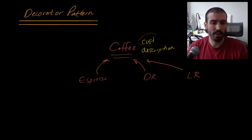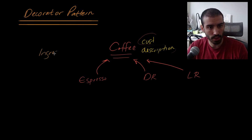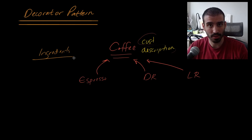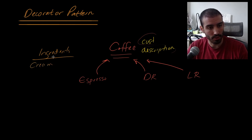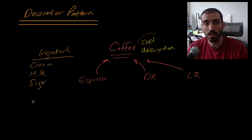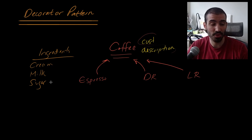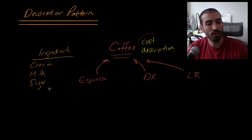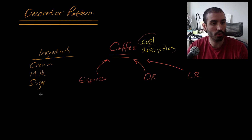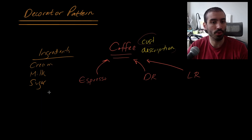Where this starts to get murky is when we introduce the concept of ingredients with additional costs — like cream, milk, and sugar. These things don't typically cost anything at a regular coffee shop, but if you have more expensive ingredients like almond milk or agave, you can easily see how this would be applicable. The question is: how do we incorporate this ingredients concept into this relationship?